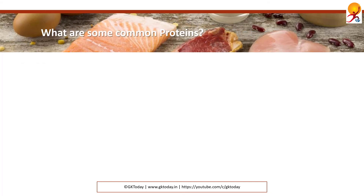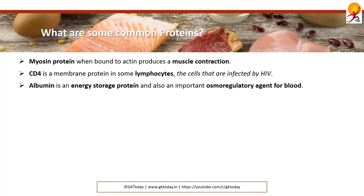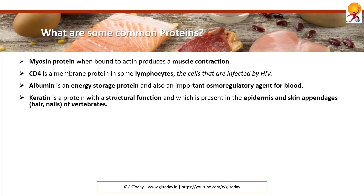What are some common proteins? Myosin protein, when bound to actin, produces muscle contractions. CD4 is a membrane protein found in some lymphocytes — the cells that are infected by HIV. Albumin is an energy storage protein and also important as an osmoregulatory agent for blood. Keratin is a structural protein present in the epidermis and skin appendages of vertebrates, including hair and nails.